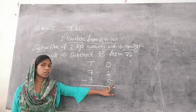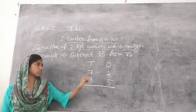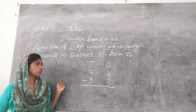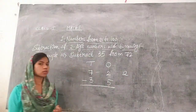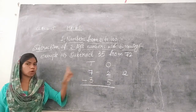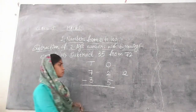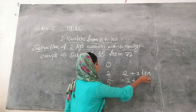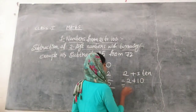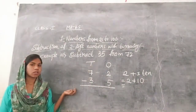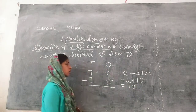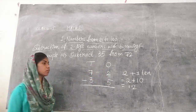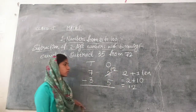We can make this 2 bigger than 5 by borrowing one from the next place. 2 comes in the ones place and the next place is the tens place, so borrow one from the 7 in the tens place. So 2 plus one ten — one ten means ten ones — so 2 plus 10 ones is 12. After borrowing from the 7 tens, these 2 ones become 12 ones.